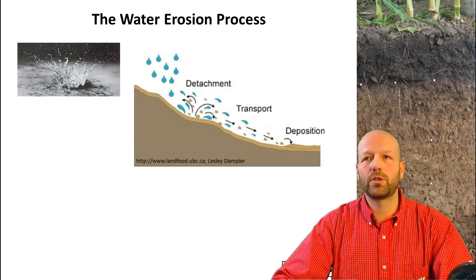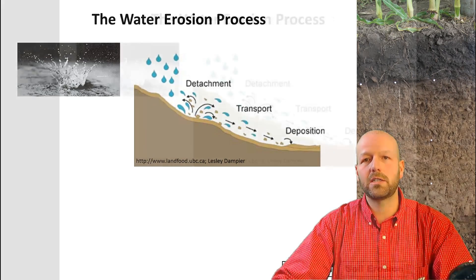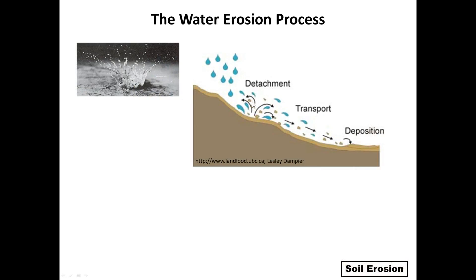Let's talk about water erosion in a little more detail. Looking at the water erosion process, it's actually a three-step process. The first step is detachment, caused by the impact of the raindrop. It hits the soil surface and detaches sand, silt, or clay particles out of the soil. If you recall from basic soils, soils with good aggregate stability will actually resist this detachment force a lot more than weaker soils.